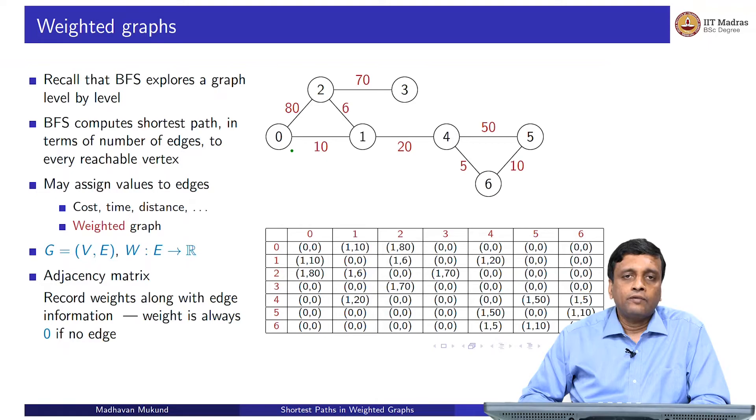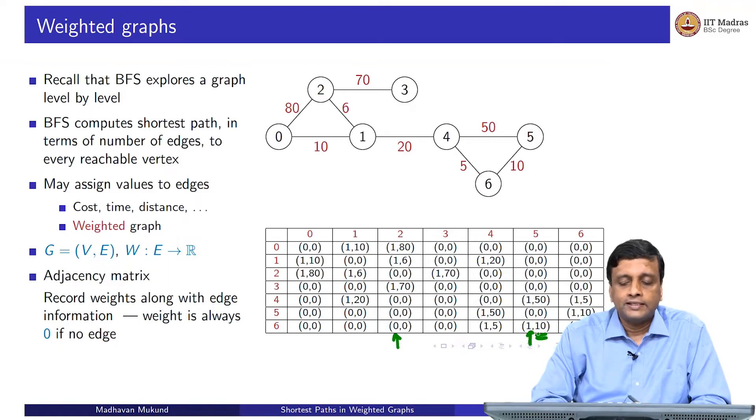Hypothetically, you could have an edge with weight 0, so it is best to keep both quantities. If we have an adjacency matrix, then in each cell of the matrix, we keep two quantities - we keep a pair where the first item in the pair is the edge information. This tells me there is no edge here, and of course, if there is no edge, the weight must be 0. But here it tells me there is an edge and the weight of that edge is 10.